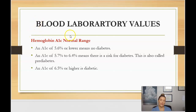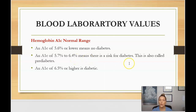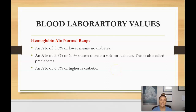The hemoglobin A1c norm ranges: an A1c of 5.6 or lower typically means the patient is not diabetic. An A1c of 5.7 to 6.4 indicates a risk of diabetes, also called pre-diabetes. An A1c of 6.5 or higher is generally considered diabetic. Diabetic patients typically have their A1c checked every three to six months — closer to three months if newly diagnosed or not compliant with their diet and medications — otherwise every six months. For non-diabetic patients, it's usually done once a year at the annual physical.